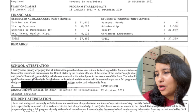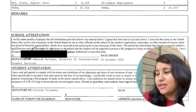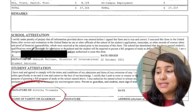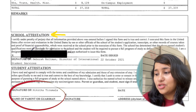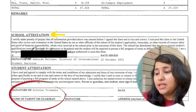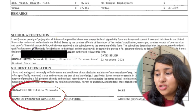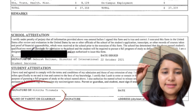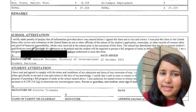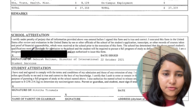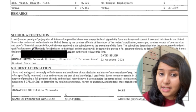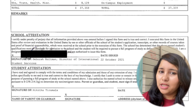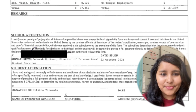Further down the I-20 there is the signature section. You'll see there's a school attestation as well as a space for the student's signature — the student needs to sign right there. This can be done any day before your visa interview; there is no specific day for it. And only if you're below 18 would you need the signature of your parent.